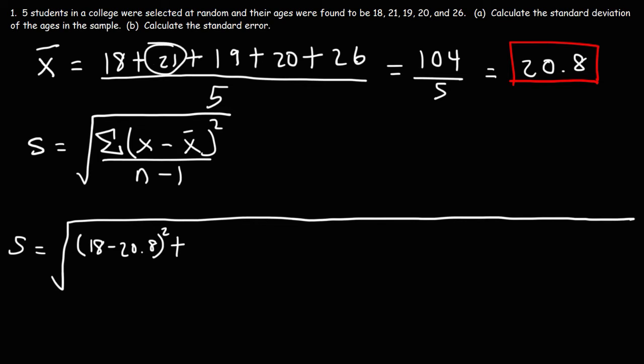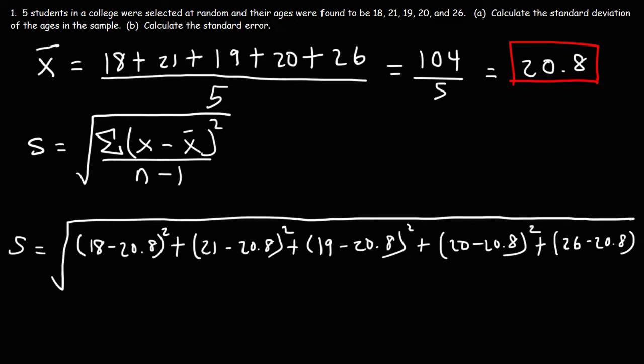Now let's move on to the second observation that we have. The second age was 21. Subtract it from the mean and then square the result. And then repeat the process for the other ages as well. So I chose a sample size of 5 because anything more, this is just going to take too long. Not to mention that I was going to run out of space too.